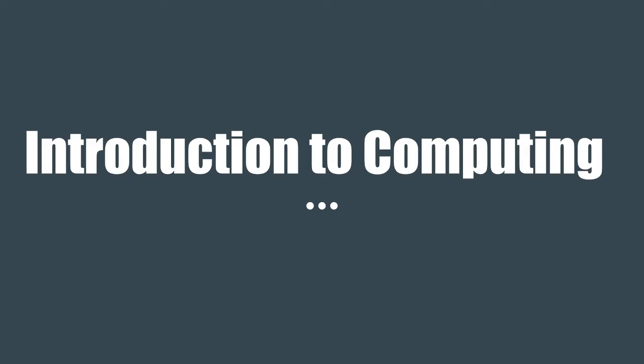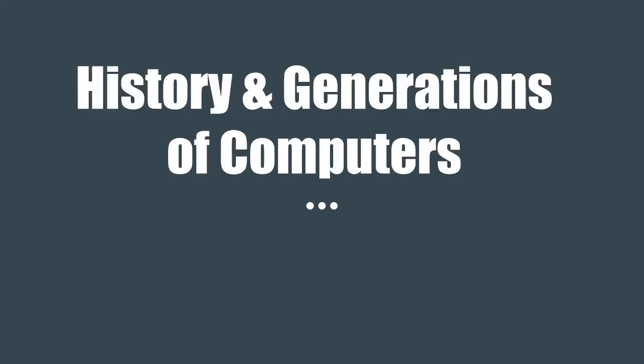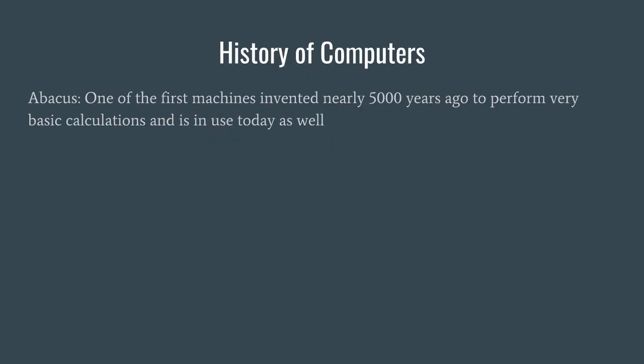So let us start. In this video, we will study about history and generations of computers. The history of computers basically dates back to more than 5000 years ago. One of the first machines that was invented was the Abacus, and this Abacus is used even today. The few operations that this machine can perform are the basic calculations — that is addition, multiplication, and so on. This was a great invention because it was the start of the era of computers.